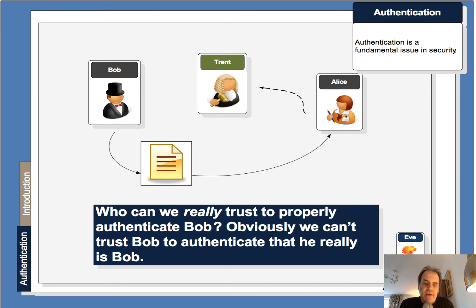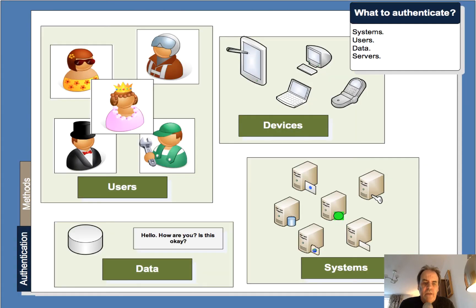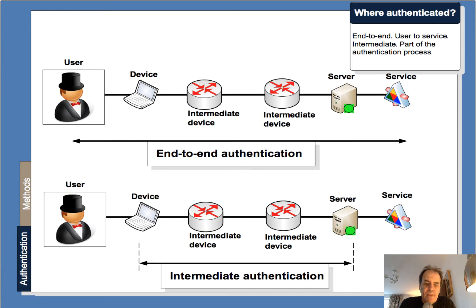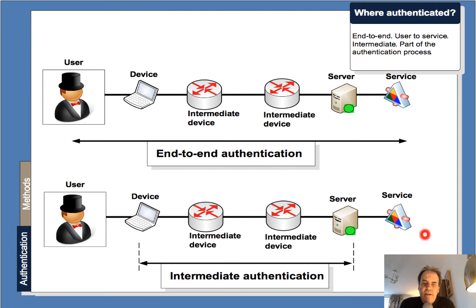Both Bob and Alice trust Trent to be able to identify each other. So what is it we're trying to identify? Well, there are many things: user identities and pseudonyms, devices, systems, and data — all of which need to be authenticated properly. We can get what's called intermediate authentication, and something like HTTPS really focuses on device-to-server communications where we tunnel secure data through the network. The problem is that at either end it's insecure.